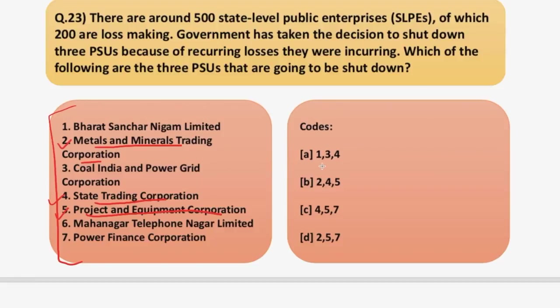Out of the seven PSUs listed, MMTC (Metals and Minerals Trading Corporation), State Trading Corporation, and Project and Equipment Corporation are the three the government is planning to shut down — so the answer is option B (2, 4, 5). Additionally, Coal India and Power Grid Corporation are among the profit-making PSUs of the government.